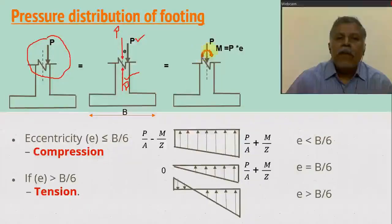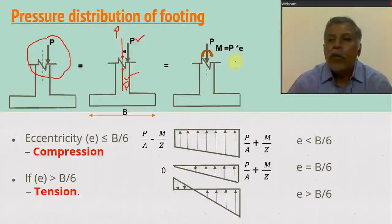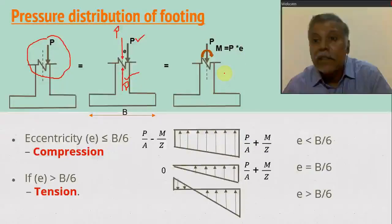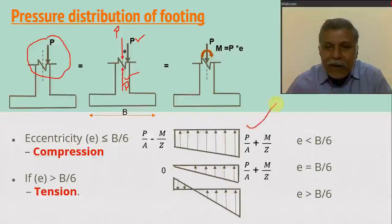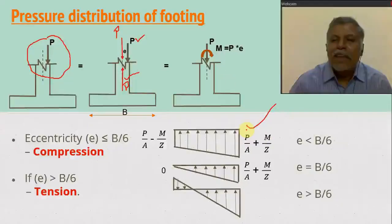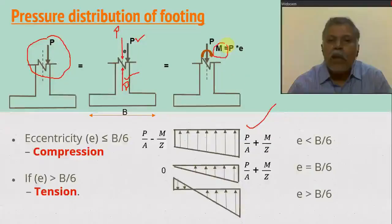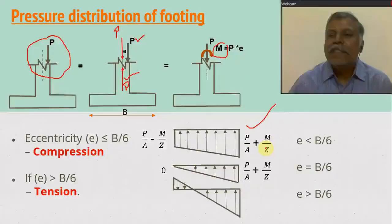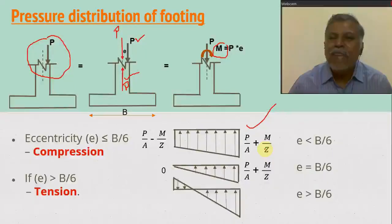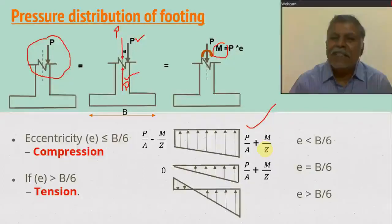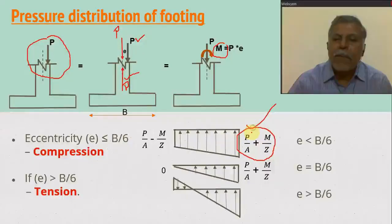So if we have a load and a moment, what about the pressure distribution diagram? For the load, we can easily calculate using the simple formula: stress = load by area, so we get P/A. For the moment, we use the bending equation M/I = f/y, giving bending stress f = M/Z. So the maximum pressure is P/A plus M/Z.